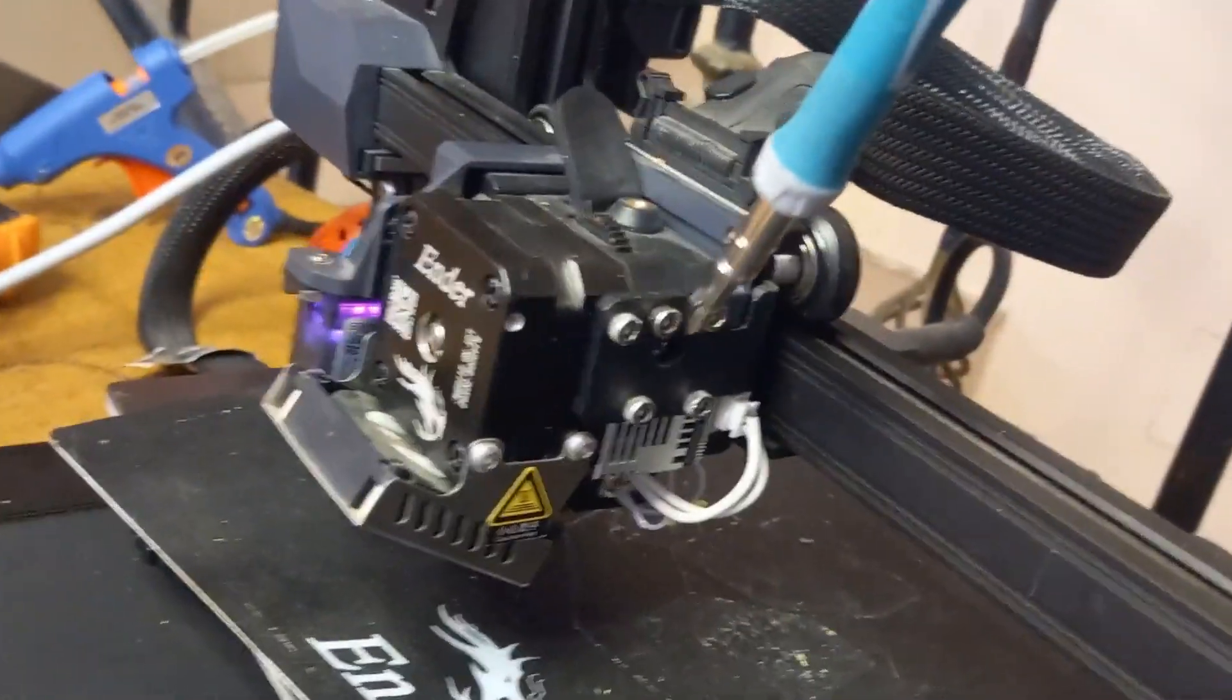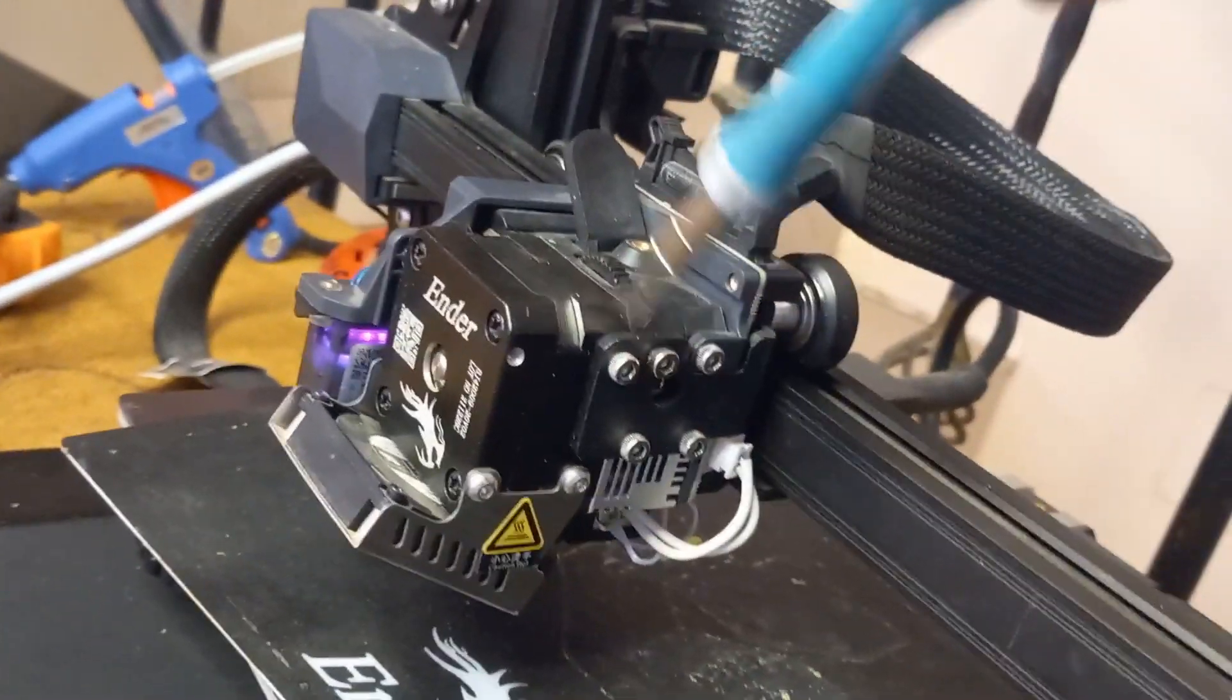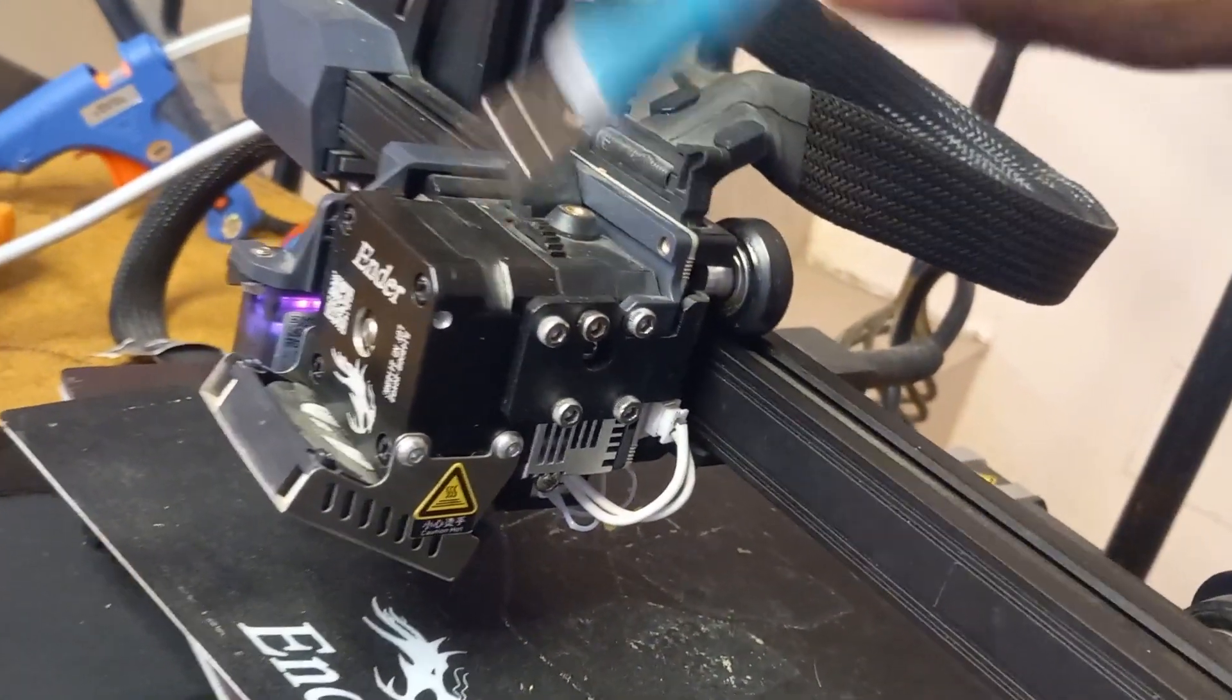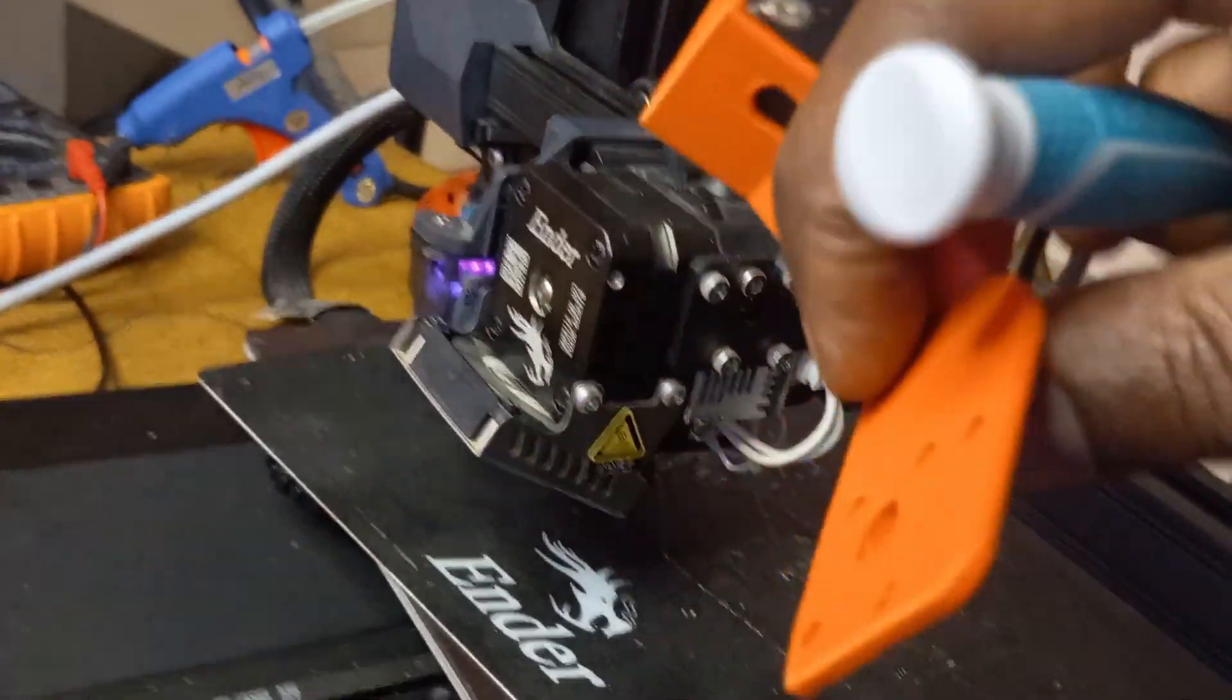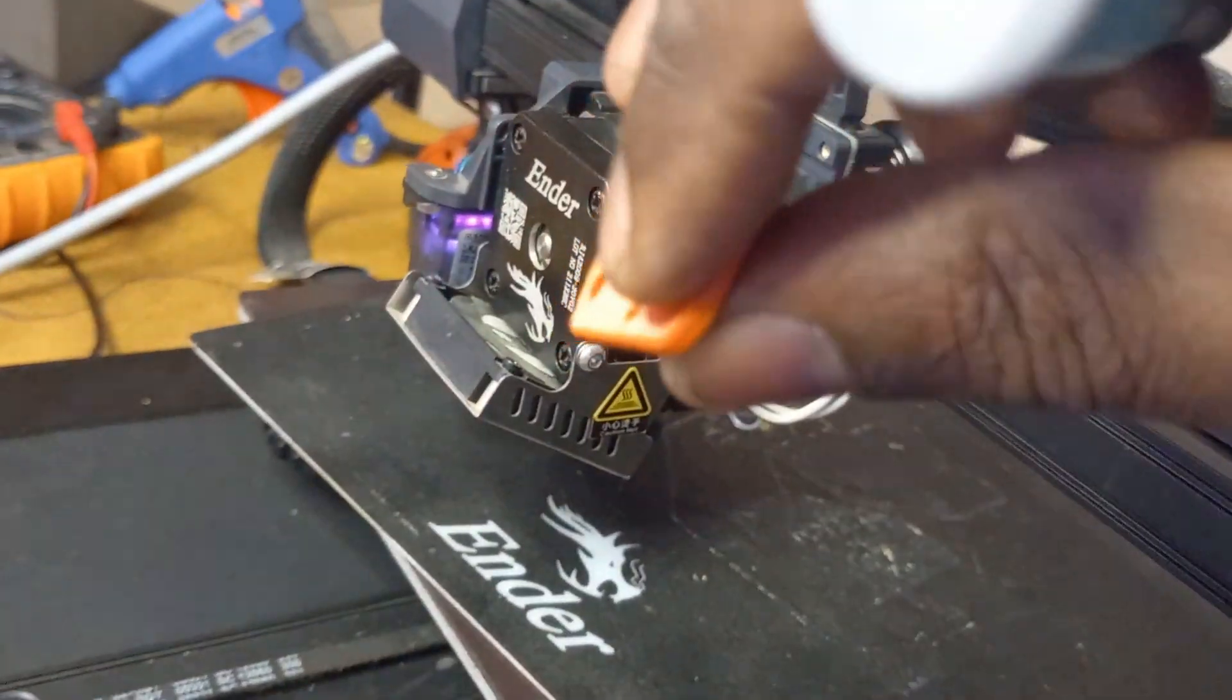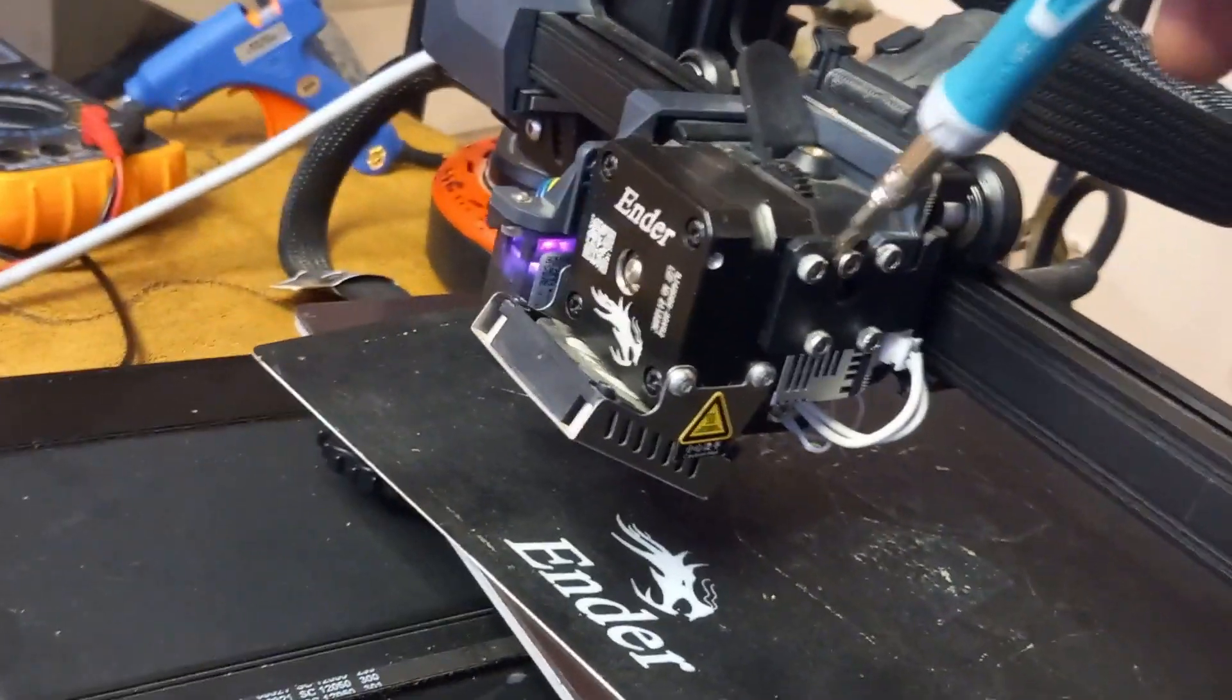The screws that come with the printer would be very short because the mount has two millimeter width at least, so these M3 by 6 screws would be very short.